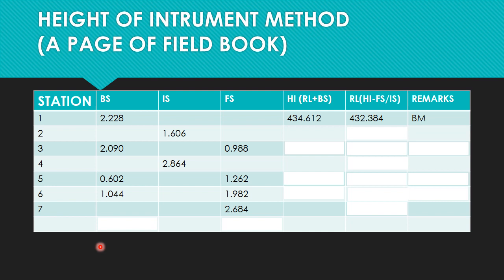For station two, the reduced level is found by subtracting the intermediate side from the height of the instrument. That is 434.612 minus 1.606, which gives us a reduced level of 433.006. For the next station, the height of the instrument 434.612 minus the foresight value 0.988 gives us a reduced level of 433.624.